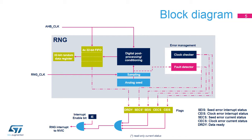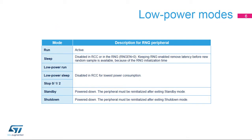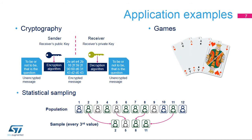The RNG frequency error check must be disabled if the RNG clock is fixed below AHBCLK/32, for example for quality reasons. The true random number generator is only active in run mode. It can be kept enabled in sleep mode to avoid latency at initialization time, but is disabled for other low power modes and is completely powered down in standby or shutdown modes.